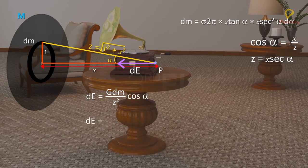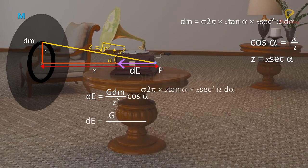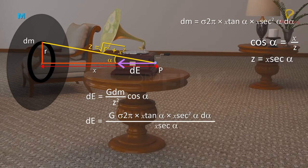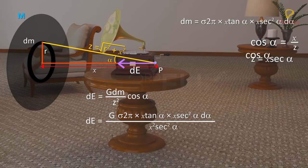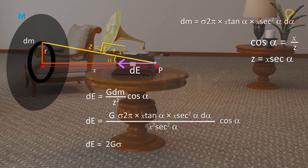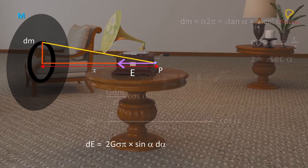dE equals G sigma 2π X tan alpha X sec squared alpha d alpha divided by X squared sec squared alpha. Therefore, dE equals 2G sigma π tan alpha d alpha.